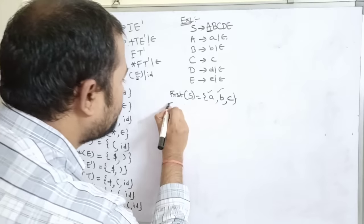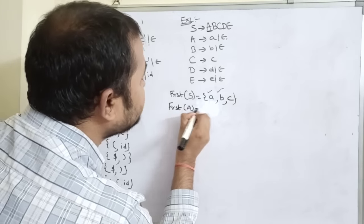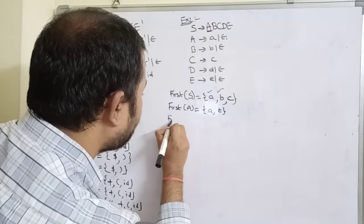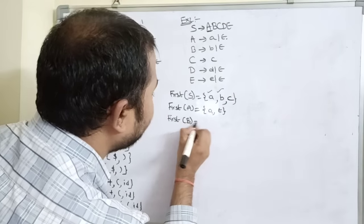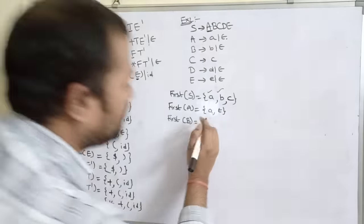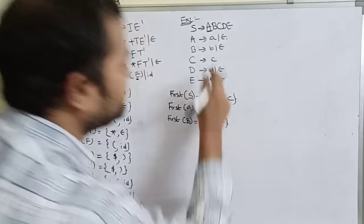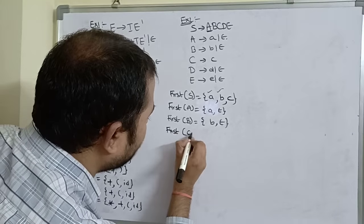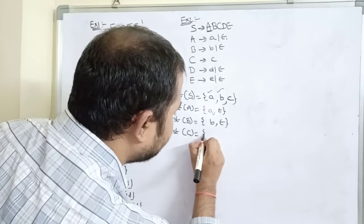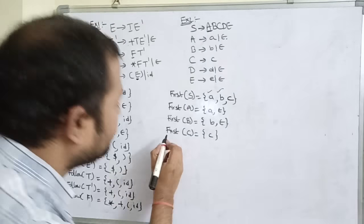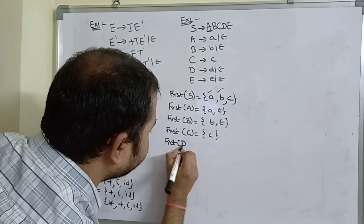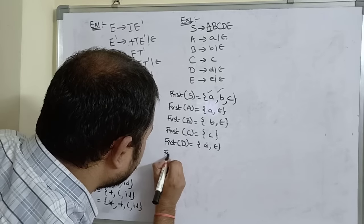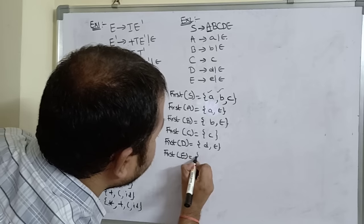FIRST of A = {a, epsilon}. FIRST of B = {b, epsilon}. FIRST of C = {c}. FIRST of D = {d, epsilon}. FIRST of E = {e, epsilon}.